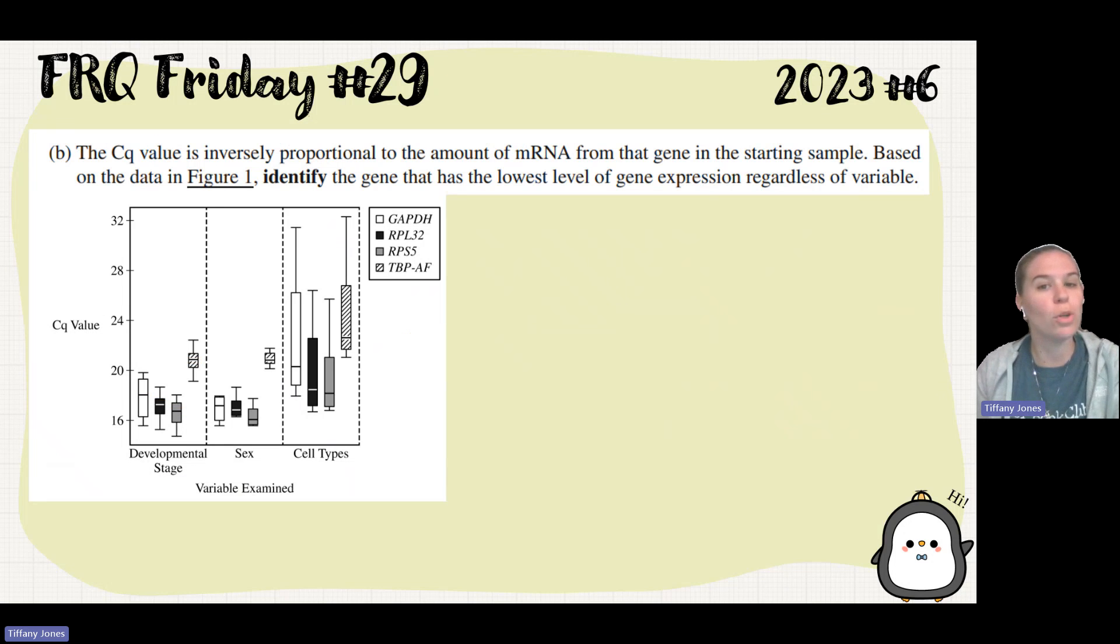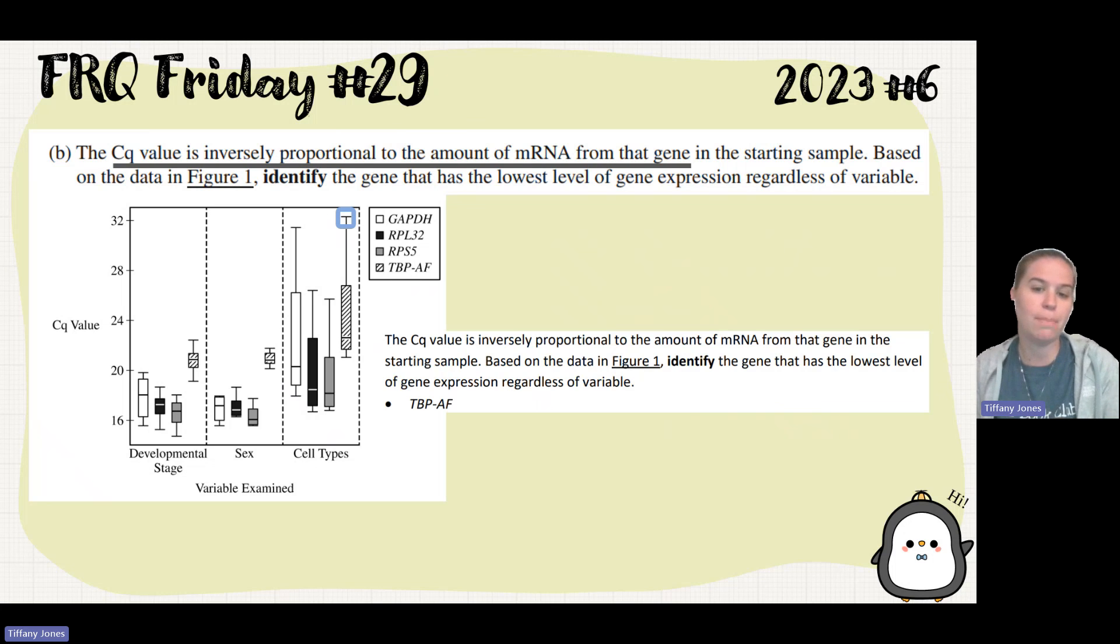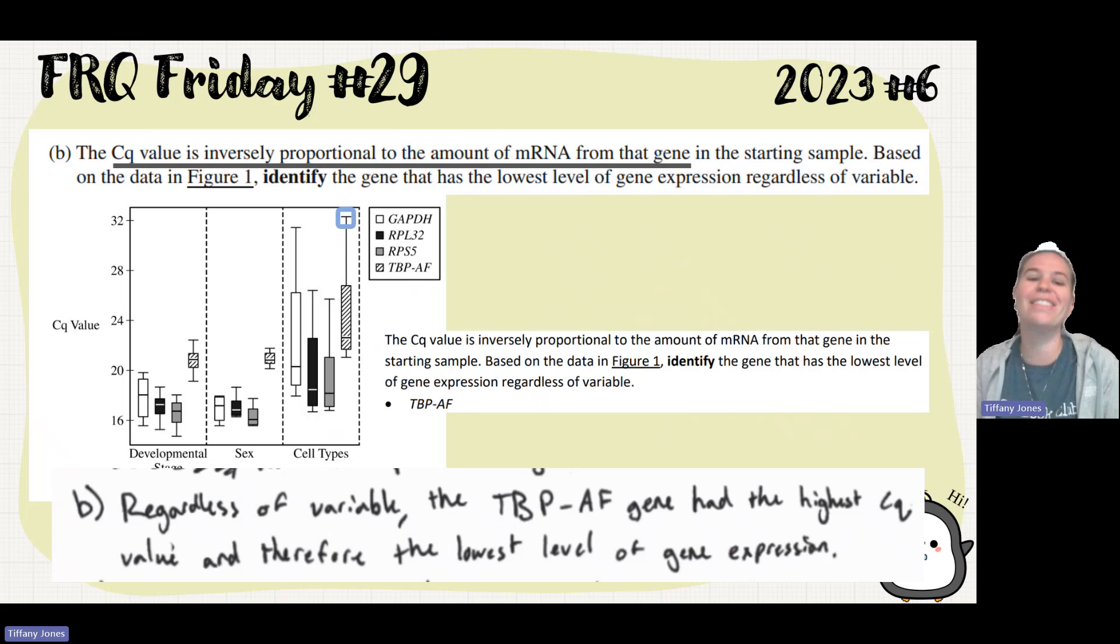Part B says the Cq value is inversely proportional to the amount of mRNA from that gene in the starting sample. Based on the data in figure one, identify the gene that had the lowest level of gene expression, regardless of the variable. So what this is asking us to do is to find the value that has the highest one, because this is saying that they're inversely proportional. So if we're asking for a low level, that means that we need a high Cq value. And so the one that has the highest Cq value, of course, is right here. So if we look at that, that's TBPAF in our cell types. Regardless of the variable, the TBPAF gene had the highest Cq value and therefore the lowest level of gene expression.